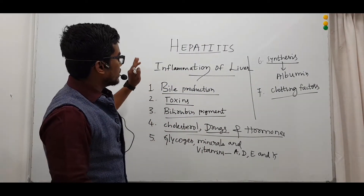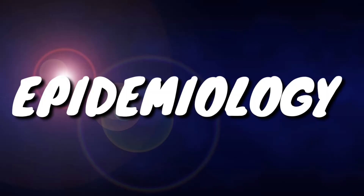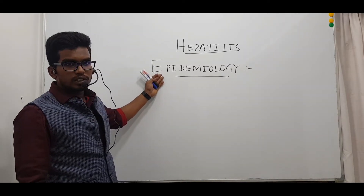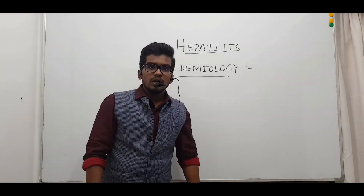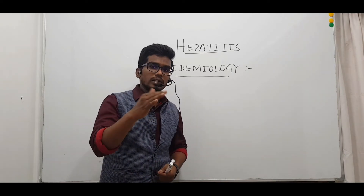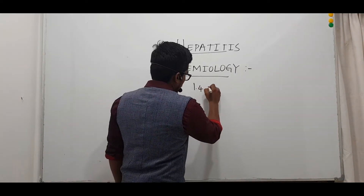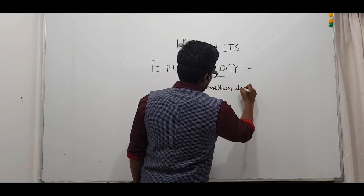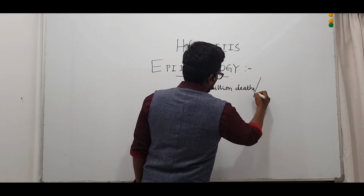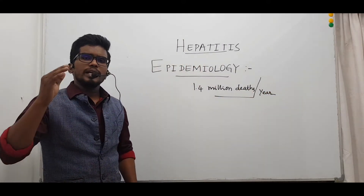So this was a short introduction about hepatitis. Coming to the epidemiology of this disease, across the world around 2.3 billion people are infected with one or the other types of hepatitis virus, resulting in around 1.4 million deaths per year. Hepatitis B virus and hepatitis C virus cause 90 percent of fatalities.